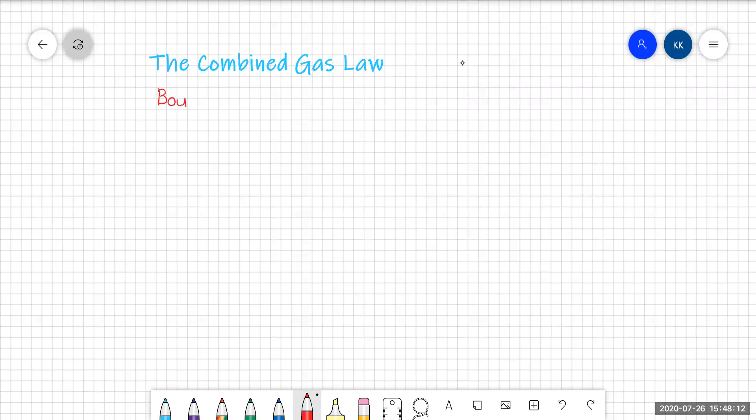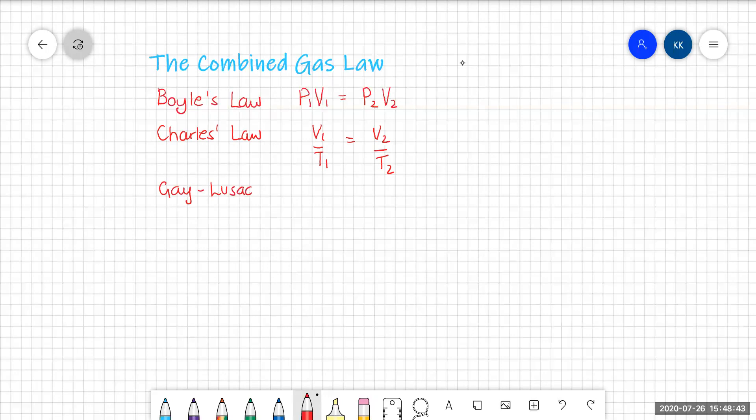We know Boyle's law, and that said P1V1 equals P2V2, and we've learned Charles law, which was V1 over T1 equals V2 over T2, and we've learned Gay-Lussac's law, which was P1 over T1 equals P2 over T2.